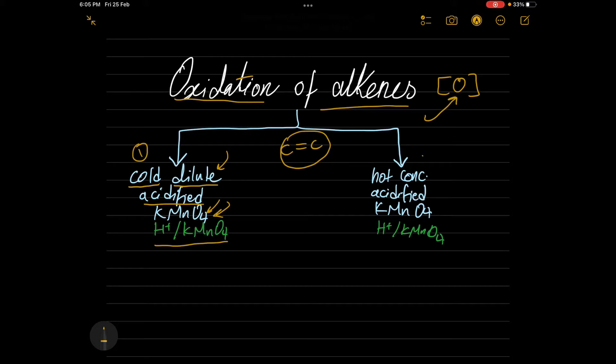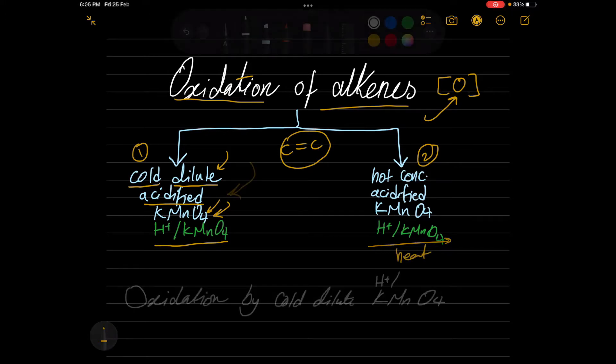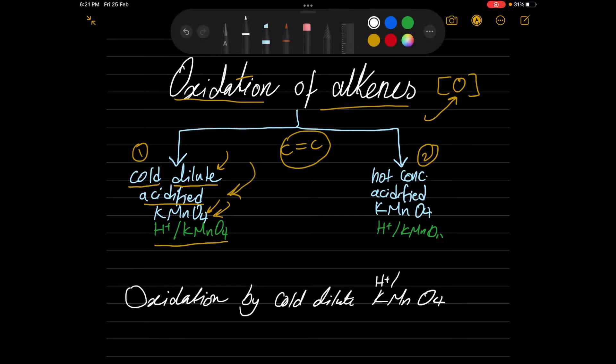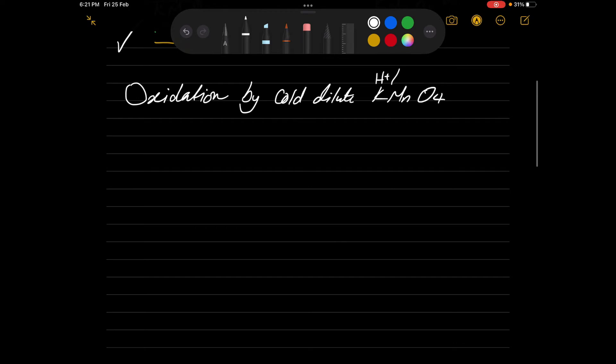And the second pathway that we can make oxidation by is when you use hot, concentrated, acidified KMnO4. So as we can see here, what makes these pathways, cold or hot, different is giving different products. So let's just start with the first one, which is the oxidation process by cold, dilute, acidified KMnO4.